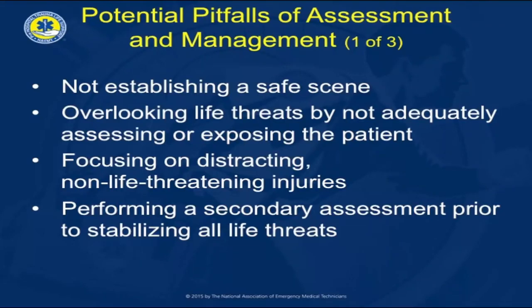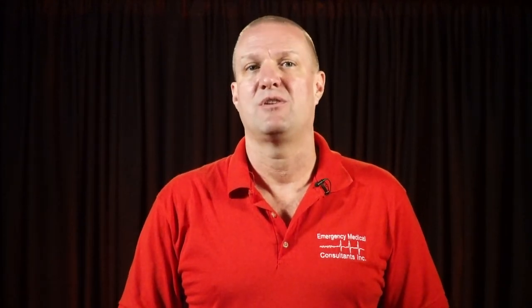Some of the pitfalls you might see: Not having a safe scene can be dangerous for you and a continuing danger for bystanders, other personnel such as police, tow truck drivers, and witnesses. Overlooking life threats found in the primary assessment because you did not do an adequate assessment or didn't expose the patient and missed something underneath their clothing. Focusing on distracting, non-life-threatening injuries — the open fracture of the wrist may be easily visible, but the bruising and contusion to the abdomen is the more life-threatening issue. Performing a secondary assessment before you've fixed all the life threats — airway needs to be secured, the patient needs to be properly ventilated and have adequate circulation. Fixing a broken wrist or ankle does not take precedence over somebody not breathing or having poor circulation.